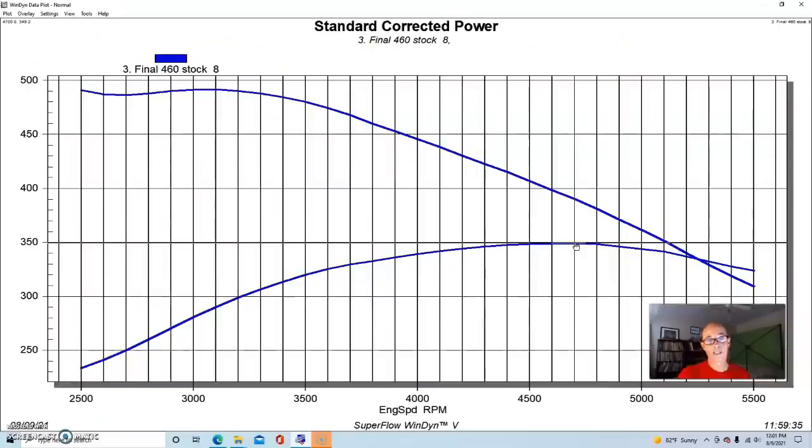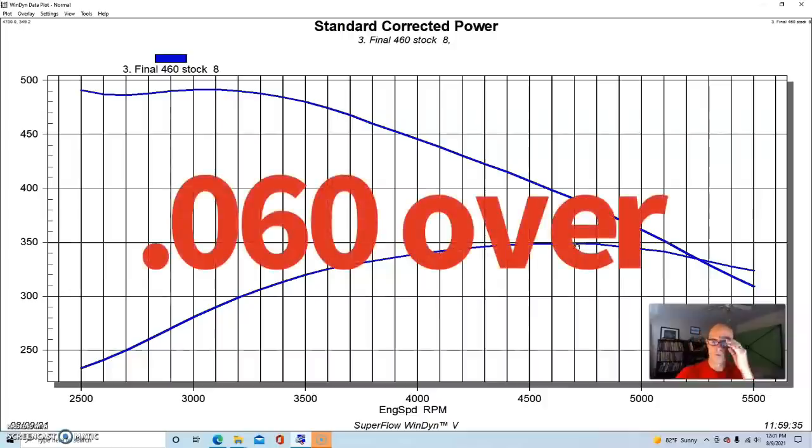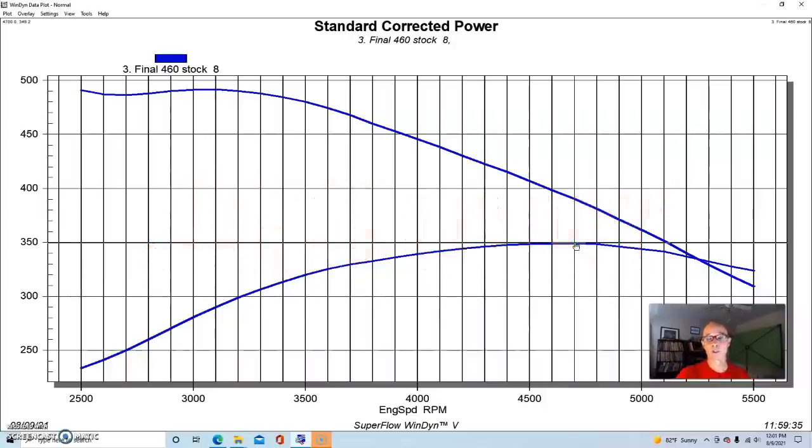So run in the way that we ran the Chevy on the engine dyno - electric water pump, long tube headers, but with the stock cast iron intake manifold - this otherwise stock but rebuilt motor... and as it turned out when we took this motor apart, it was already 60 over, so it had a little bit more displacement as well. This thing made 349.2 horsepower.